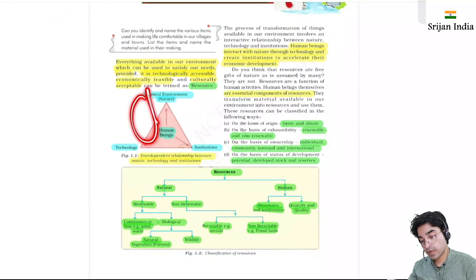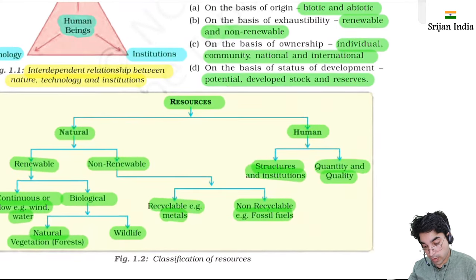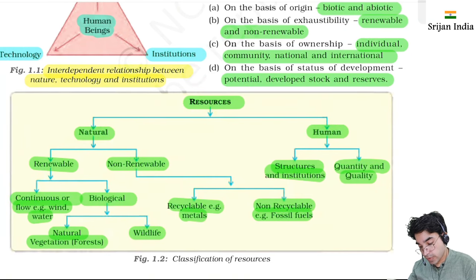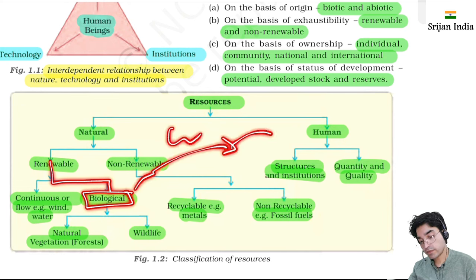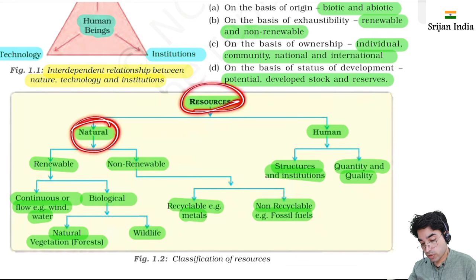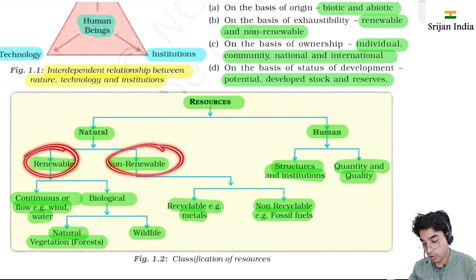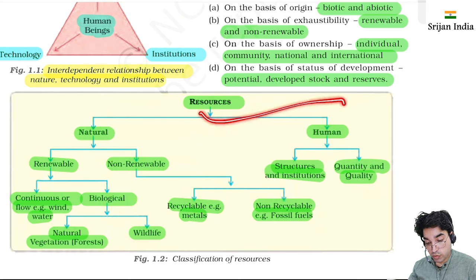In chart form: resources are natural or human. Natural resources include renewable and non-renewable. Renewable includes continuous or flow resources like wind and water, and biological resources like animals - generation after generation. Biological includes natural vegetation, forest, and wildlife. Human resources include structures and institutions, and also quantity and quality of human resource.